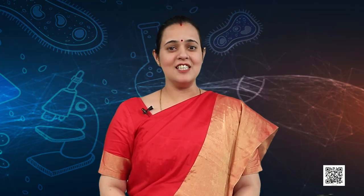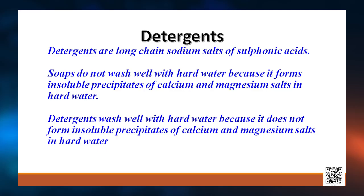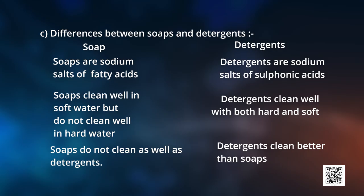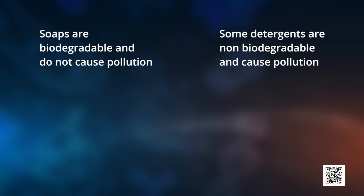We have learnt about soap. Detergents are sodium salts of long-chain sulfonic acids. Soaps do not wash well with hard water because they form an insoluble precipitate of calcium and magnesium salts. Detergents wash well with hard water because they do not form such insoluble precipitates. Soap is the sodium salt of a long-chain carboxylic acid, whereas detergents are long-chain sodium salts of sulfonic acid. Detergents clean better than soap in hard water, and soaps are biodegradable while most detergents are non-biodegradable.